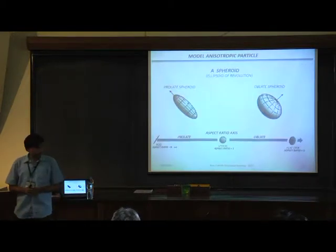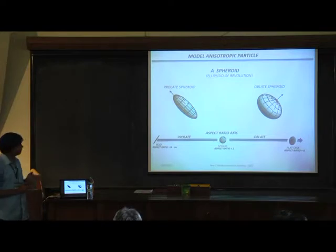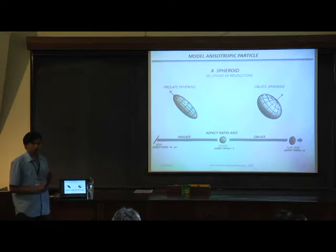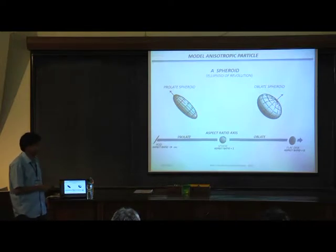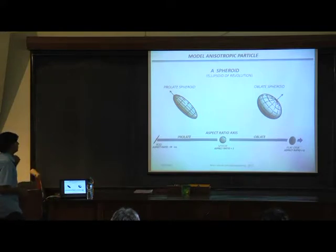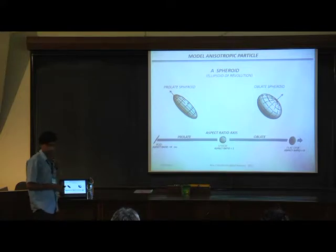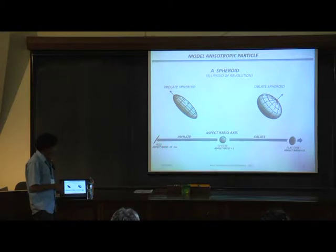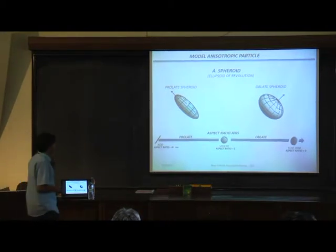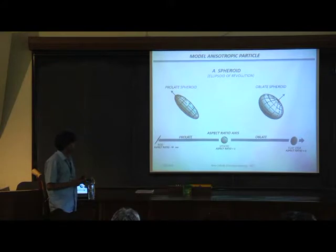Suspensions of anisotropic particles are important, and we look at the simplest model anisotropic particle: the spheroid. Stretching a sphere along one axis gives a prolate spheroid; flattening it gives an oblate spheroid. The anisotropy is characterized by a single parameter, the aspect ratio. You can go from needle-shaped objects with very large aspect ratios through a sphere to disc-shaped objects with very small aspect ratios.